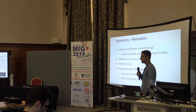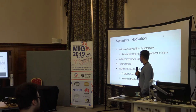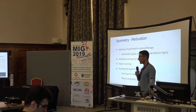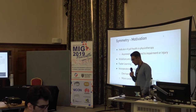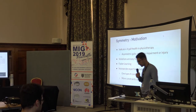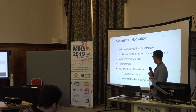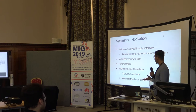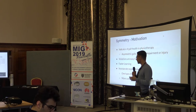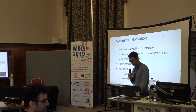Violations of symmetry are easy to spot. Also, one more reason you might want to use symmetry is that you might expect it to give you faster learning, because if you have symmetry, you just need to learn the motion for the right side and the left side comes with that. And another reason is that as a big picture, you want to incorporate expert knowledge into your system, and think of symmetry as just one type of constraint — there are more constraints that you can think of.